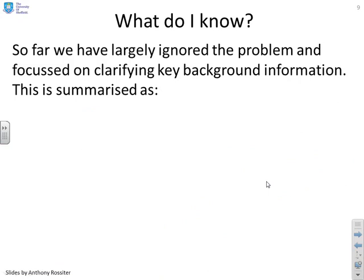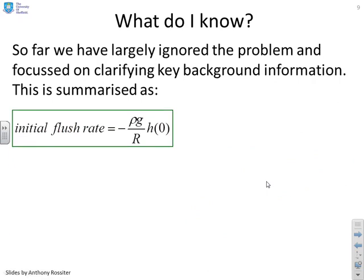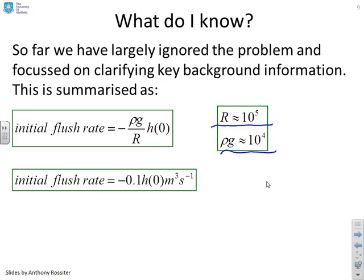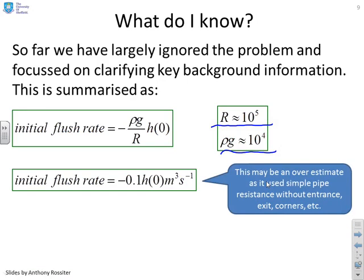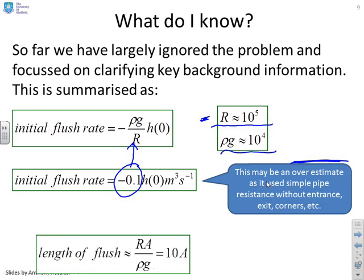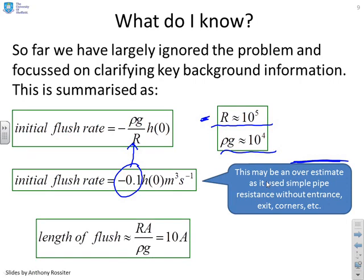Now, so far, we've largely ignored the problem and focused on clarifying key background information linked to tanks and flow through pipes and things of that nature. So what have we discovered? We've said the initial flush rate is minus ρg/R times the initial depth. And we've worked out that a value of R somewhere over the order of 10 to the 5 is probably going to be roughly what we want. ρg is 10 to the 4. The initial flush rate is minus 0.1 times the initial depth. And this may be an overestimate as it used pipe resistance without an entrance, exit, corners and so on. So essentially where this 0.1 has come from is from here. OK, this ρg/R, and you'll see this R has come from a simplistic assumption. So in other words, this initial flush rate could be an overestimate. The actual flush rate is probably a little bit less. And the length of the flush we discovered was Ra/(ρg), which is 10a. Again, putting in these numbers R and ρg that we've derived here.